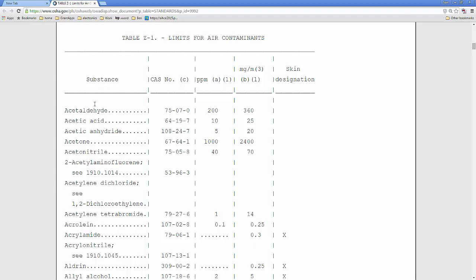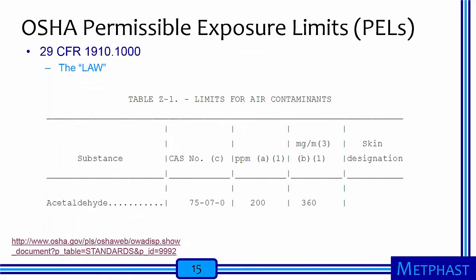Looking at the table, the first substance listed is acetaldehyde, with a CAS number of 75070. I cut and pasted this table into my presentation. Here I can see Table Z1, Limits for Air Contaminants. Here's the substance — acetaldehyde — and here is the CAS number, or Chemical Abstract Services number. The limit for this substance is 200 ppm, or translating that into milligrams per meter cubed, 360 milligrams per meter cubed.